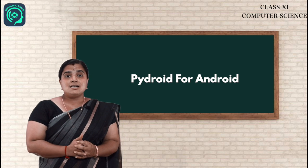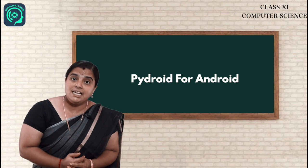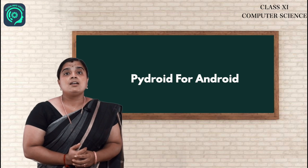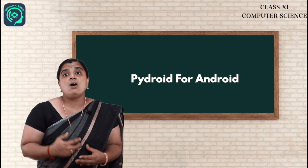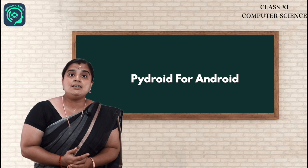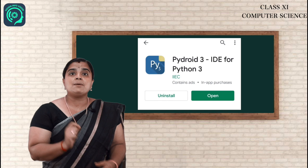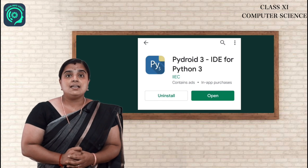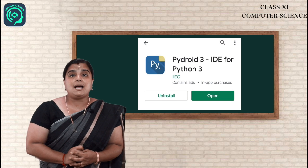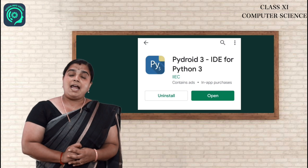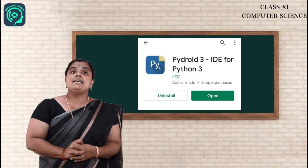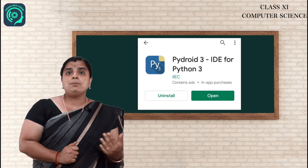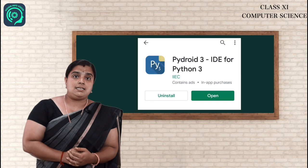Don't worry about it. Python can be easily installed on Android or smartphones or any other modern phones. Just go to the Play Store and type Pydroid 3 — that is the latest version of the Python platform for Android phones. It is easy to install and easy to execute any Python program.